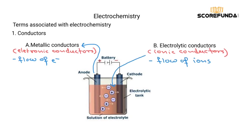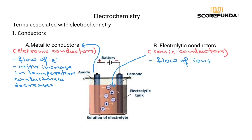Now let's talk about metallic conductors and what happens with increase in temperature. When electrons move, the residual kernels are positively charged. Because of the temperature they start vibrating, and because of this vibration the resistance increases. So we say there is a decrease in conductance and resistance increases.